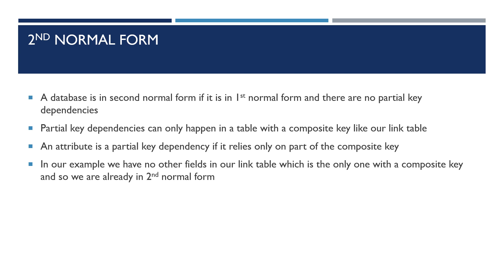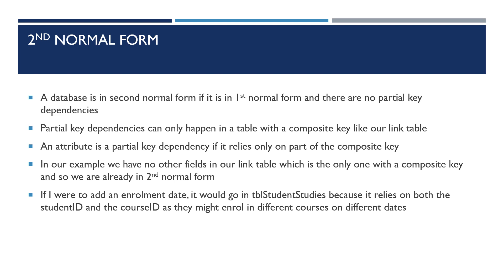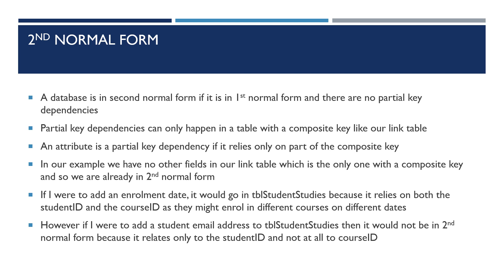In our example, we have no other fields in our link table, which is the only one with a composite key, and so we are already in second normal form. If I were to add an enrolment date, it would go in the table Student Studies because it relies on both the student ID and the course ID, as they might enrol in different courses on different dates. However, if I were to add a student email address to the table Student Studies, it wouldn't be in second normal form because the email address only relates to the student ID and not at all to the course ID — this means it should go in the Students table.